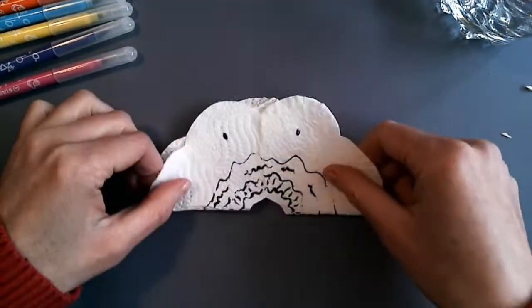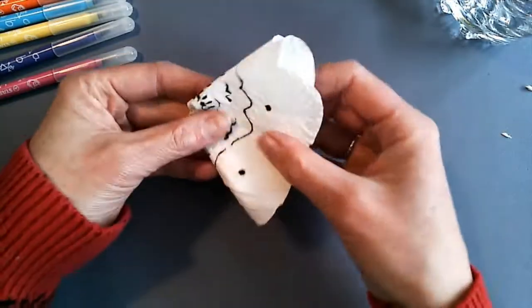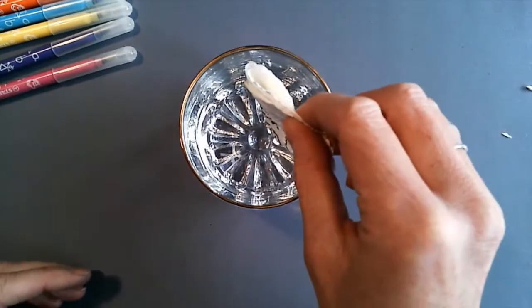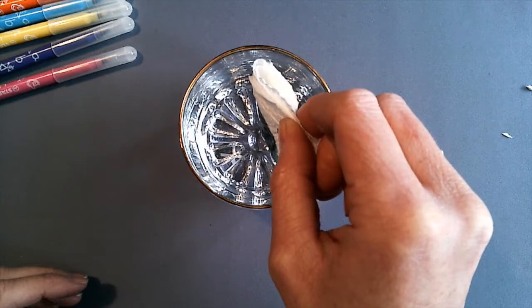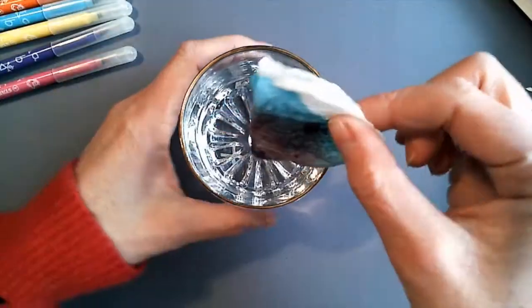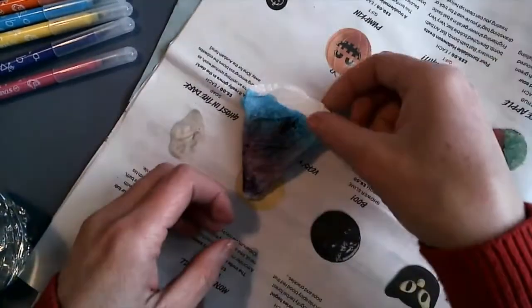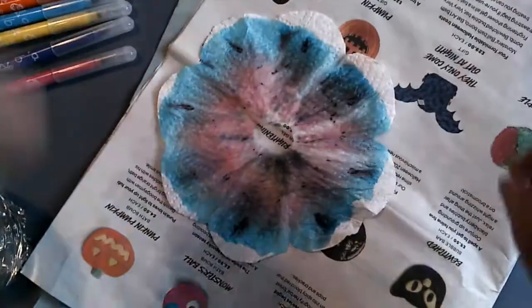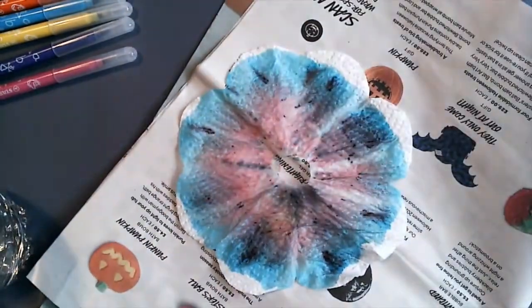Fold it back in half, doesn't matter if it doesn't match, half again, and then half again. Take your water and dip the pointed end into the water. Now you can leave it in the water, but I like to hold it and keep an eye on the color changing. Make sure you've got a suitable place to open up the wet work. Carefully open it up as it will be fragile, and look at all of the colors from the black felt tip pen. Isn't that amazing?